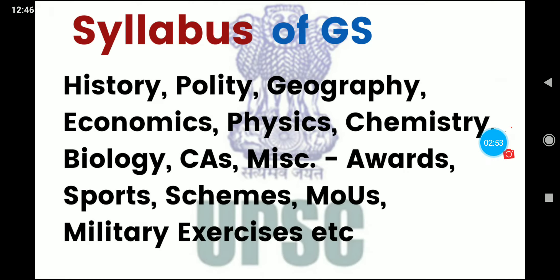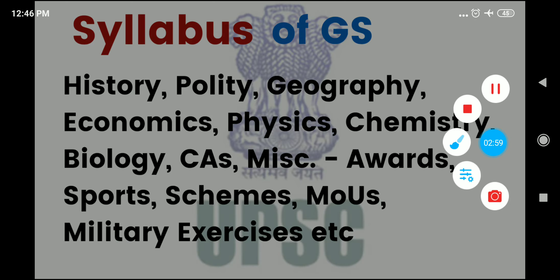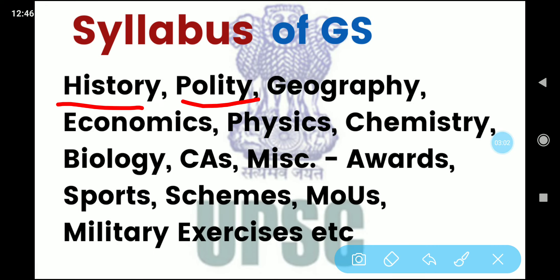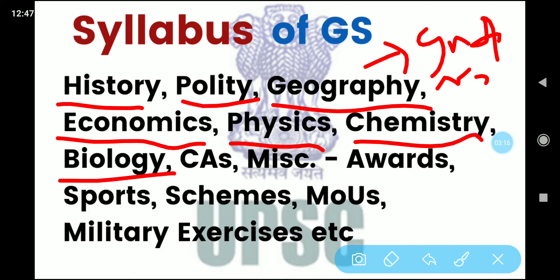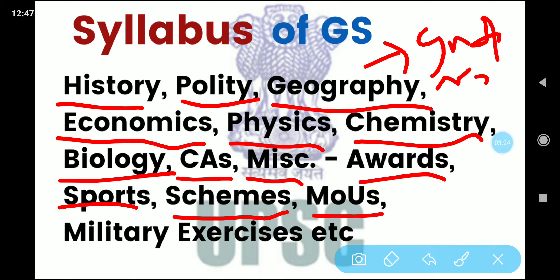Now we will discuss about the CDS GS paper syllabus. You can see the syllabus of GS on your screen. It consists of: Polity, Geography (both Indian geography and World geography), Economics, Physics, Chemistry, Biology, Current affairs, and some miscellaneous topics which include Awards, Sports, Government schemes, MOUs between countries, Military exercises, and so on.